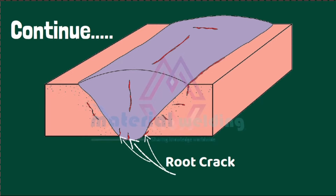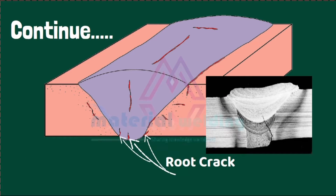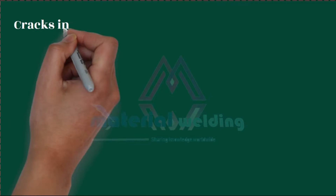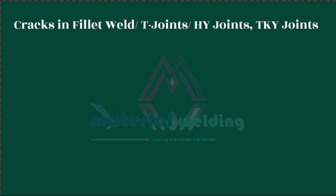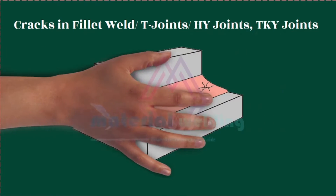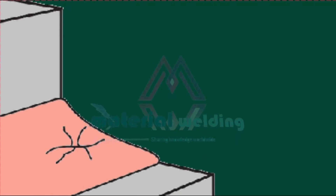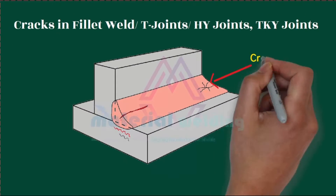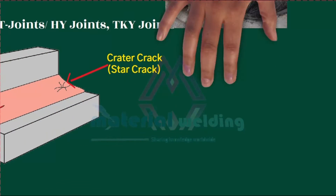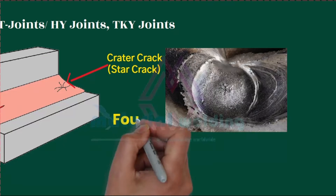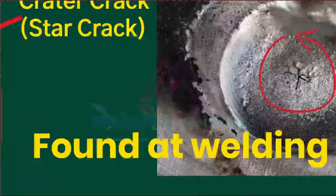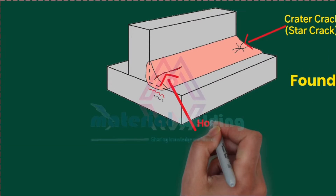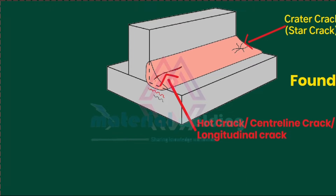A root crack appears at the weld root and can propagate deep into the weld or base metal. It can also appear in a groove weld. A hot crack, or centerline crack, appears at the weld center and is caused by distresses and low melting phases in the weld metal.